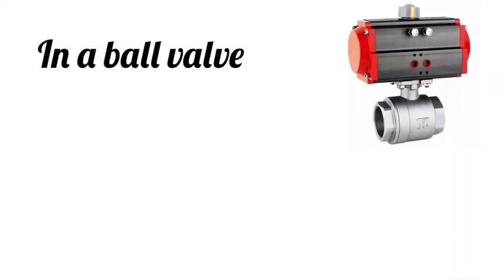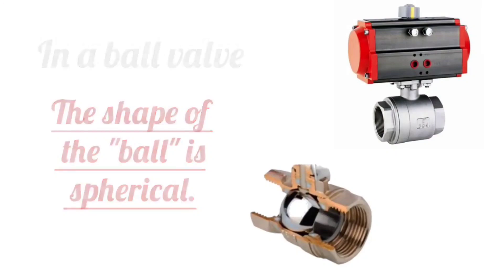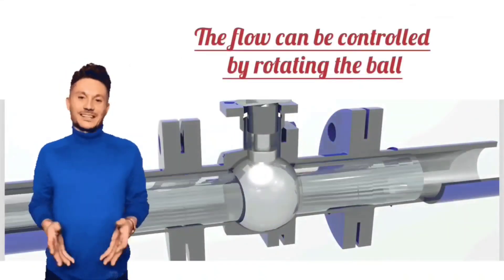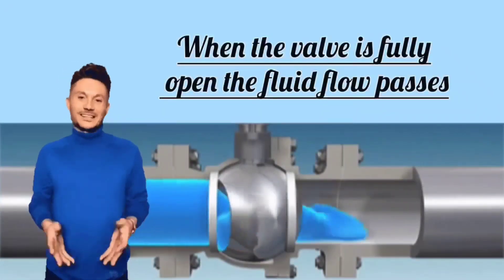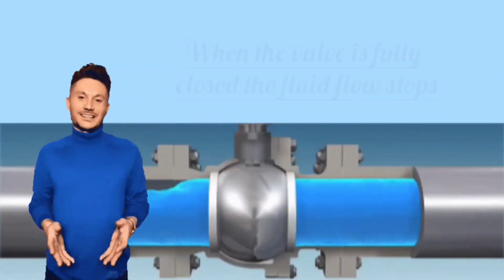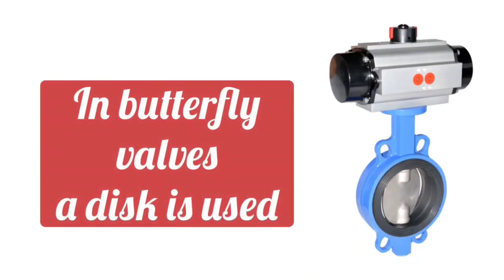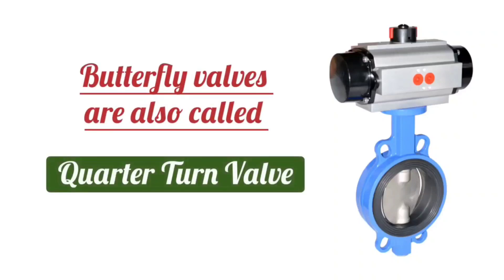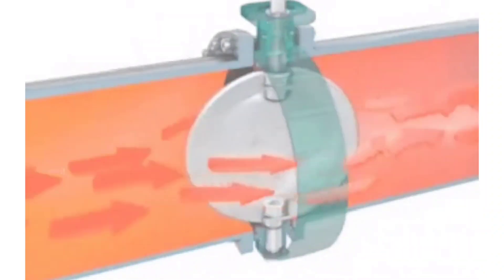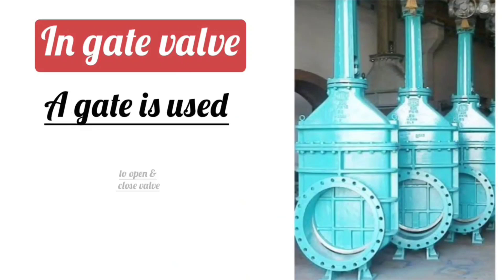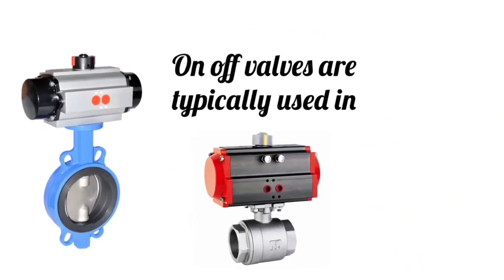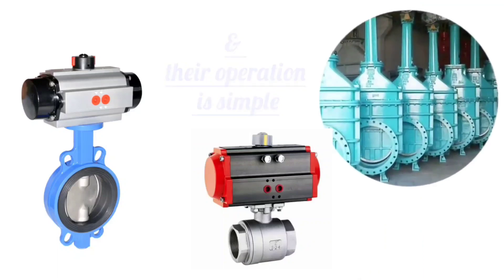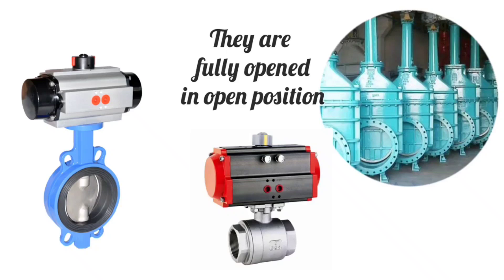In a ball valve, the shape of the ball is spherical. The design of a ball valve is in the form of a hollow sphere which has a hole, and the flow can be controlled by rotating the ball. When the valve is fully open, the fluid flow passes, and when the valve is fully closed, the fluid flow stops. In butterfly valves, a disc is used and the fluid flow is switched on and off. Butterfly valves are also called quarter turn valves — these valves rotate 90 degrees. In a gate valve, a gate is used to open and close the valve. These on-off valves are typically used in straight line flow systems and their operation is simple. They are fully opened in the open position or fully closed in the closed position.